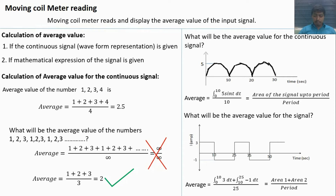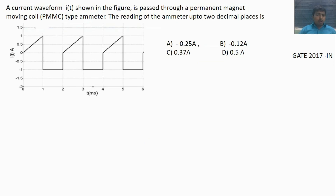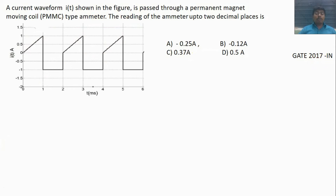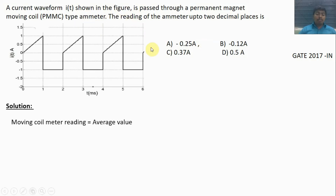This is the method for average value calculation for a continuous signal when a waveform representation is given. Now we will solve a gate question. A continuous current signal is given; if this current signal is passed through a permanent magnet moving coil type ammeter, what will the meter read? This question was asked in GATE 2017 instrumentation engineering.